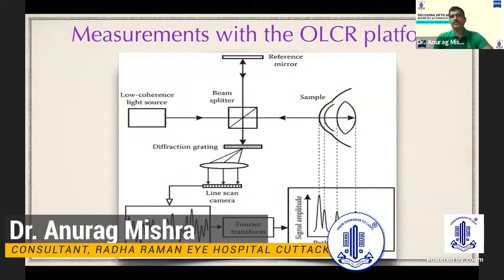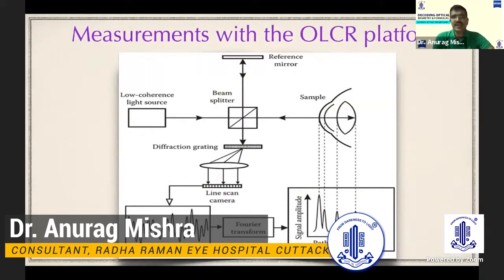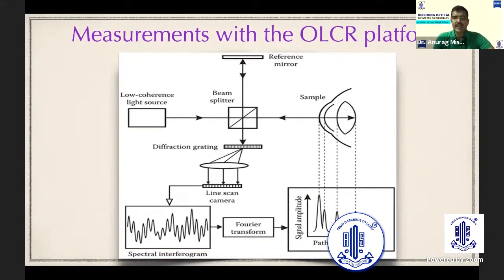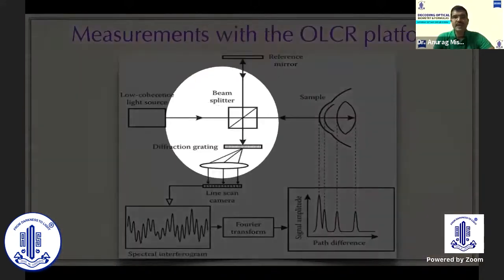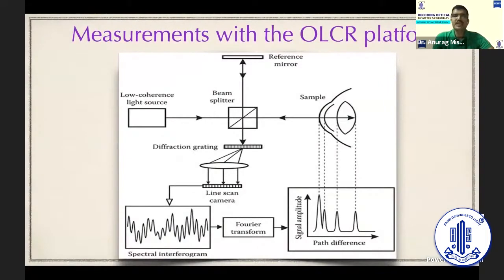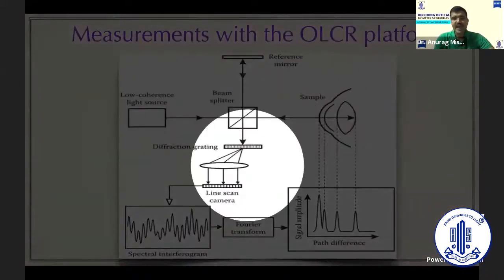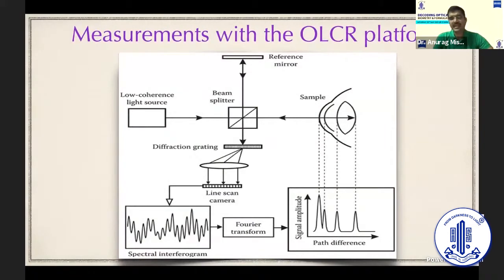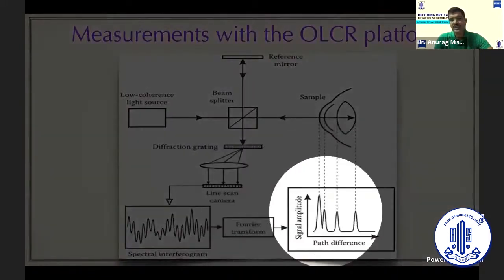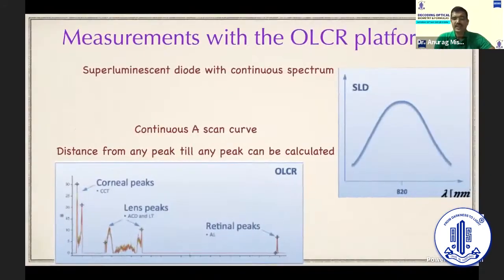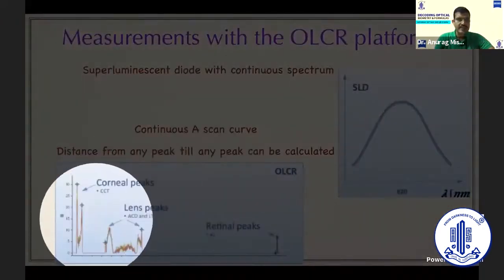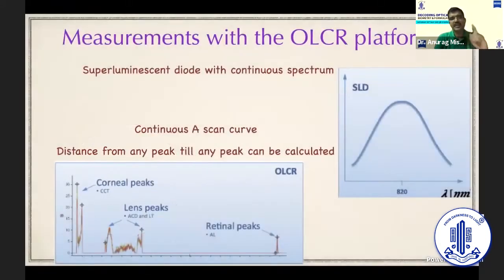So to correct that, the next platform came in, which was optical low-coherence reflectometry utilized by LENSTAR LS900. We had only one reference mirror instead of two. The light source was a super-luminescent diode which had a single peak. The wavelength improved to 820 nanometers, which improved the penetration. It also had waveforms coming from the subject's eye, which were matched with a reference wave, which was incorporated into the database of the machine. Both of the waves underwent Fourier transmission to give us a single A-scan curve. Now, the advantage of the single A-scan curve is we can determine the distance between any two peaks, and which can give us things like the pachymetry, the anterior chamber depth, and the lens thickness.